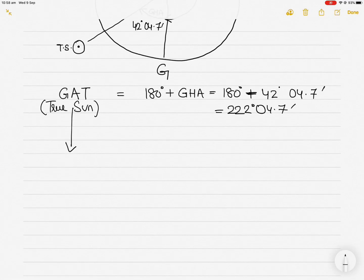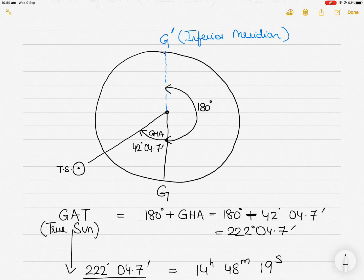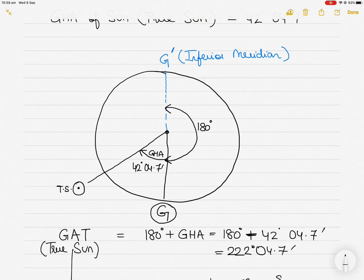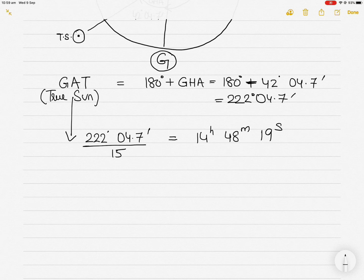To get the Greenwich Apparent Time, we take 222° 04.7' and divide by 15, because every 15 degrees equals 1 hour. Dividing 222° 04.7' by 15 gives us 14 hours 48 minutes and 19 seconds. So the GHA of the true sun was 42° 04.7', we added 180° to get 222° 04.7', and dividing by 15 converts that to Greenwich Apparent Time of 14 hours 48 minutes 19 seconds.